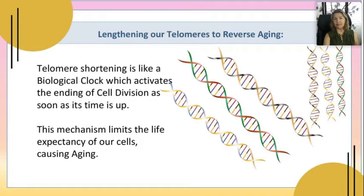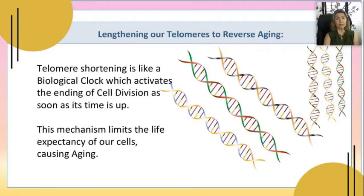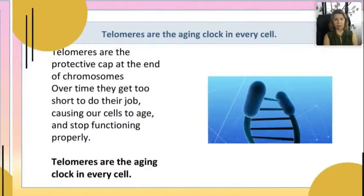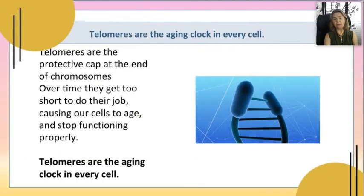That biological clock is the way it had worked — the mechanism limits the life expectancy of our cells, which is why it's critical to all current aging research. But it doesn't matter what anyone else is doing; we're doing it here today. The telomeres are the protective cap at the end of the chromosomes. Over time they get too short to do their job, and that's what causes the cells to age and stop functioning properly — that aging clock inside every cell.